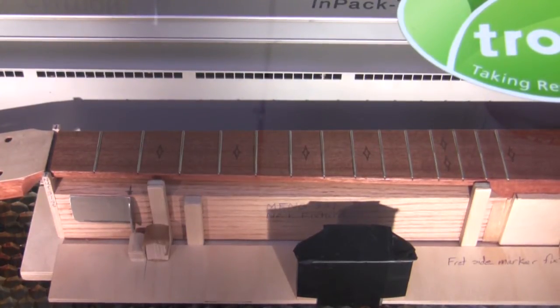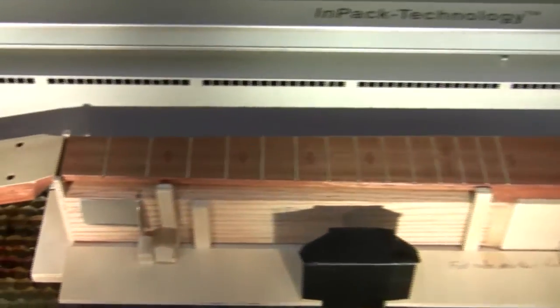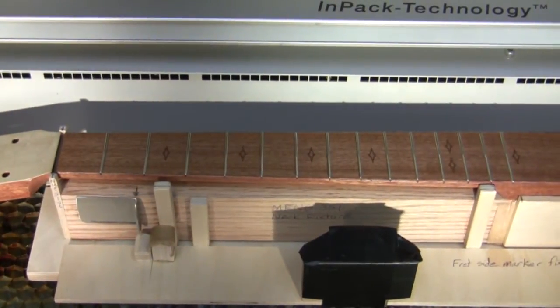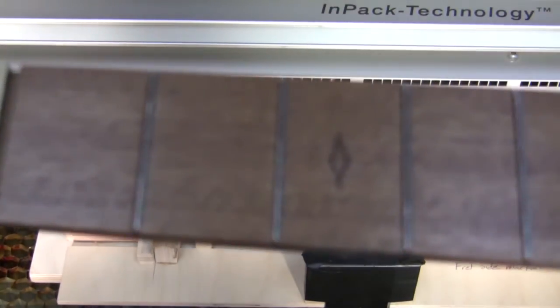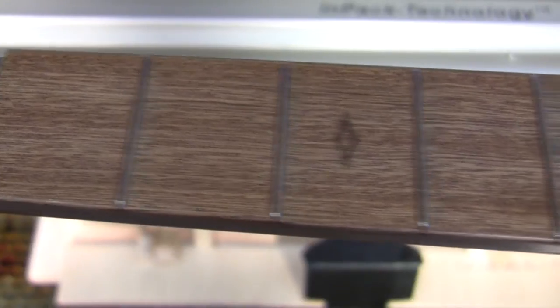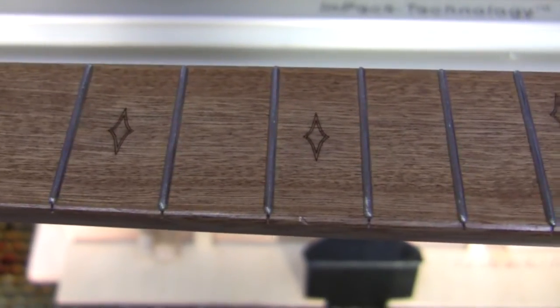Once you hear the beep then you can open the lid and withdraw your neck and inspect the quality of the etching. You should see reasonably crisp lines assuming it was in focus. Repeat that for all of the necks in your group that have that pattern.